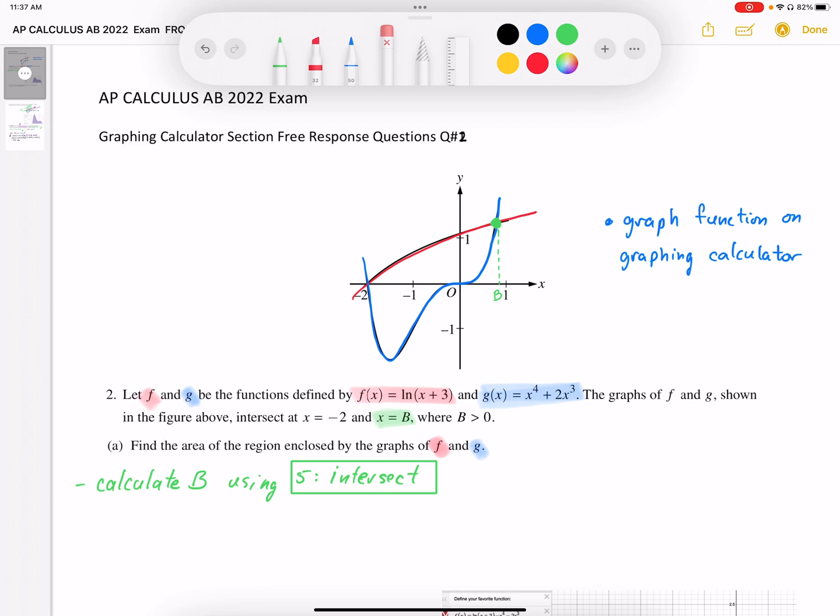The first thing we need to do is recognize this is a graphing problem. We need to graph the functions on the graphing calculator, and then calculate the intersection b. We're going to use the calc function on the TI-84, calc 5, which is the intersect function.